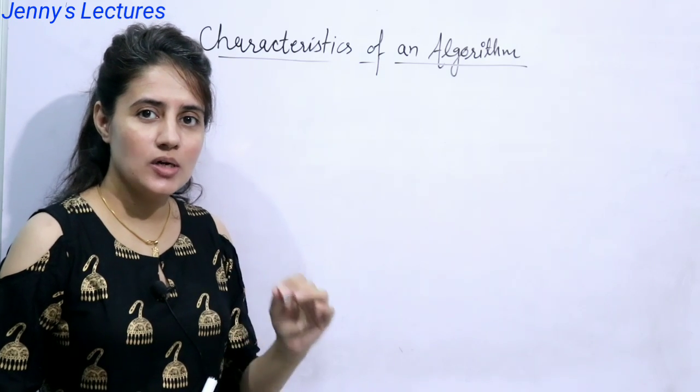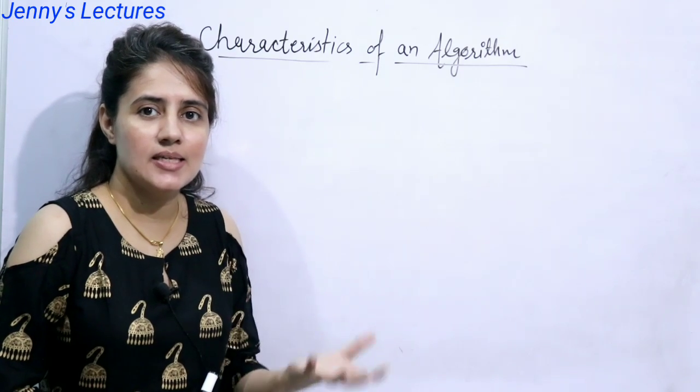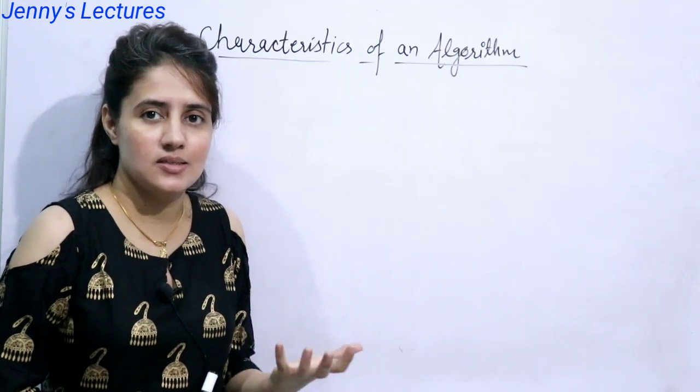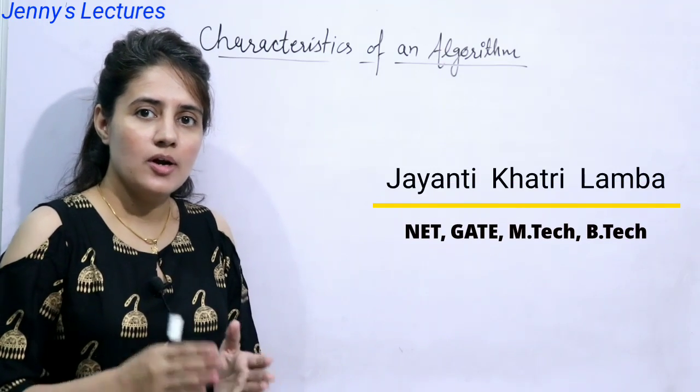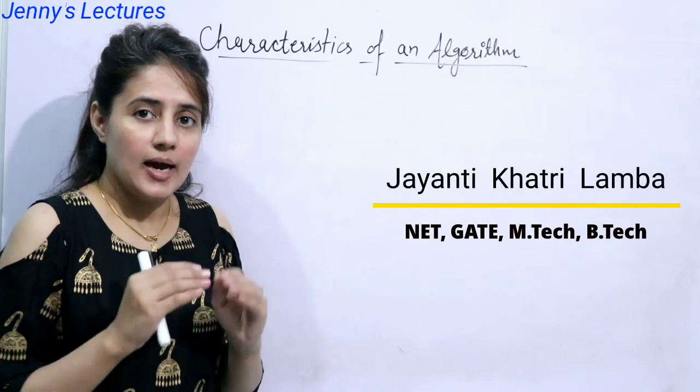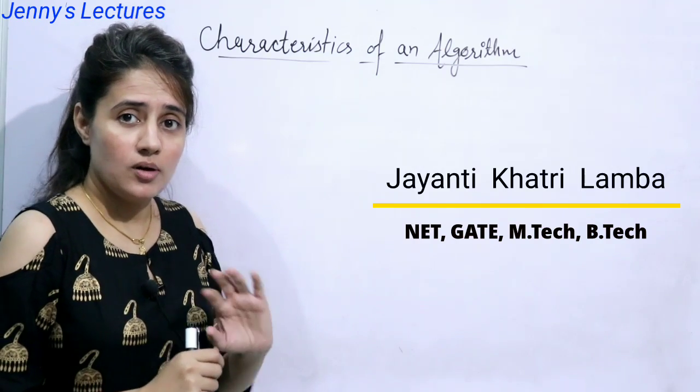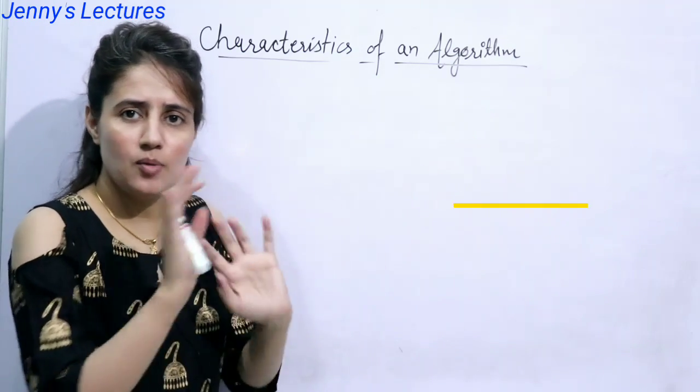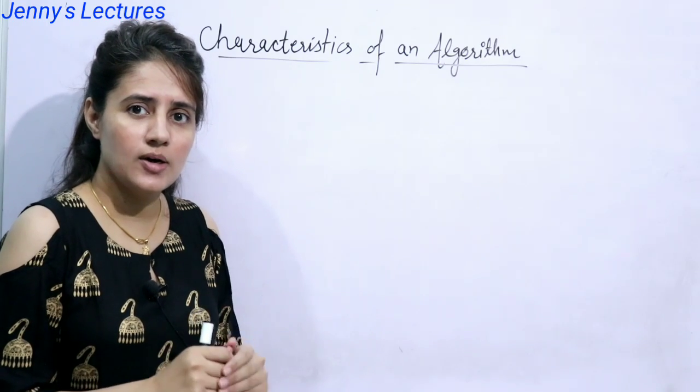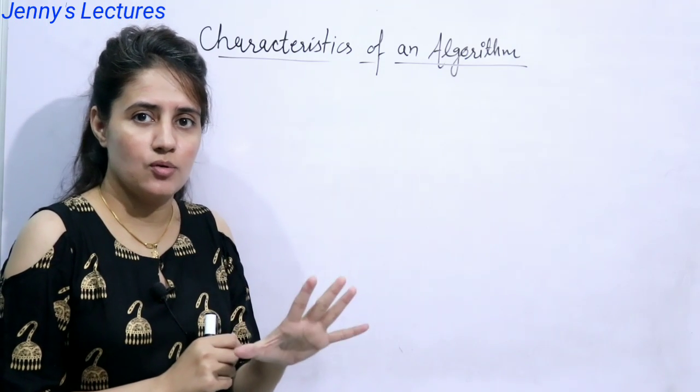I have already discussed what is an algorithm and how to analyze an algorithm, means the types of analysis like priority analysis and posterior analysis. And in this video, we will discuss about the properties of an algorithm. So basically, you can say many properties are there, but generally what we read in the book are there are five properties of an algorithm.